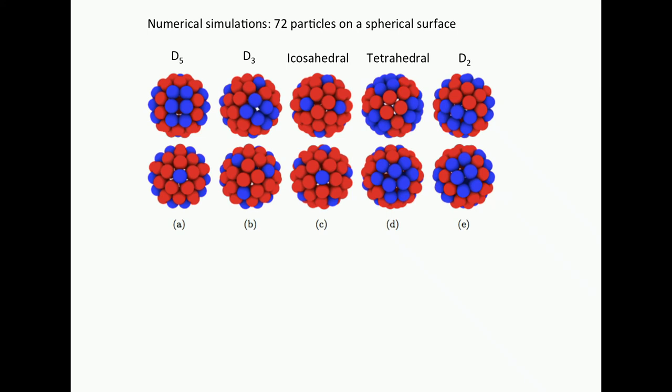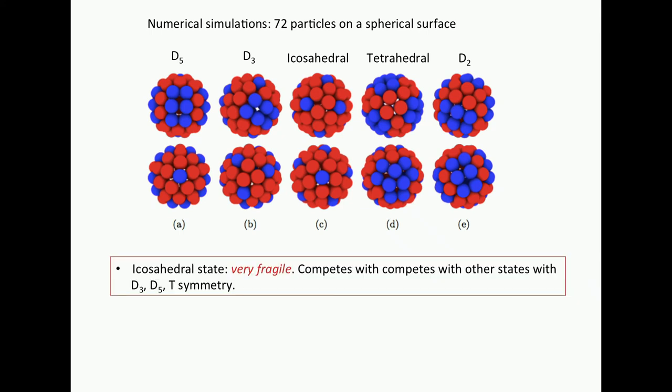They said, well, what is the minimum energy state? And they got a zoo of states nearly the same energy. D5. Did you remember D5? That's what we got. D3, icosahedral, tetrahedral, D2. The icosahedral state is just barely stable if you change the parameter for very small interval. So the icosahedral state is very fragile. It competes with other structures with completely different symmetry. So this is the reference.